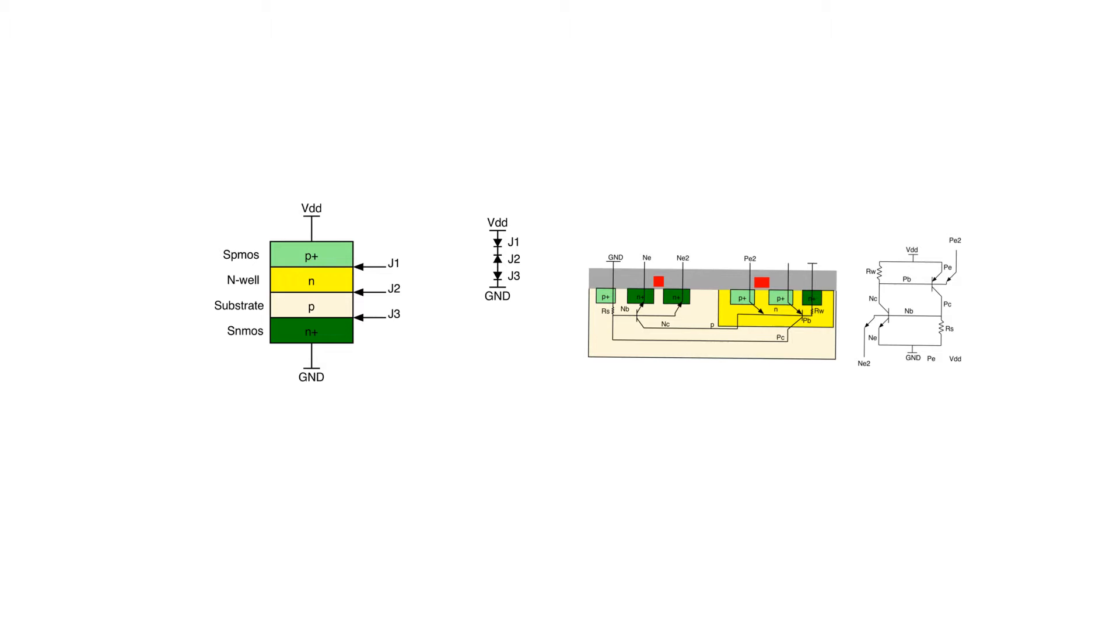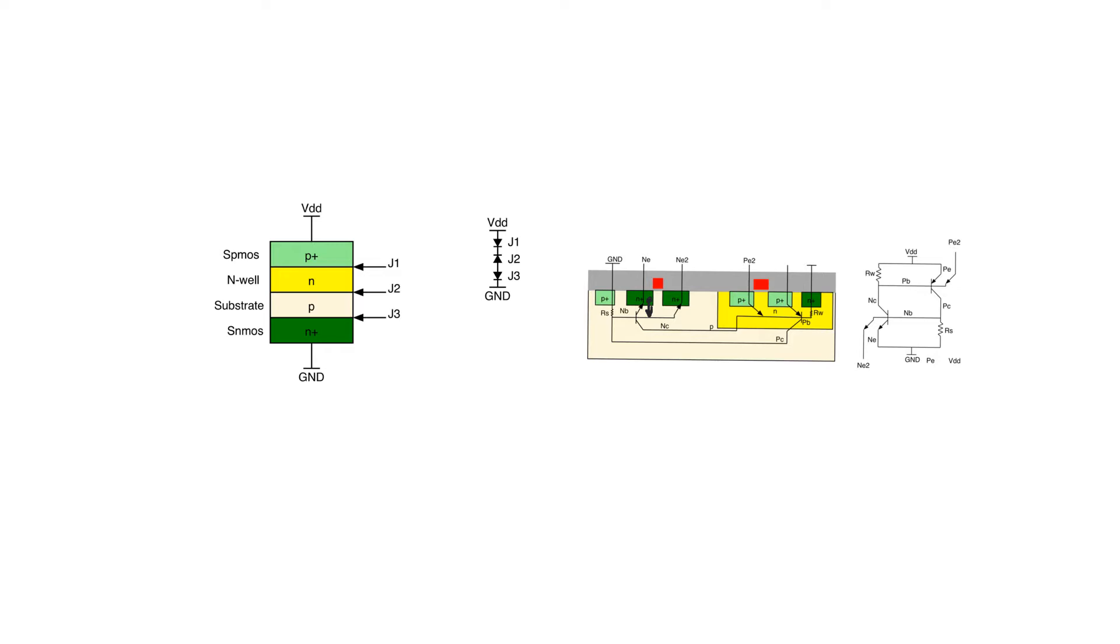So by the end of the last video, we discovered that we have three PN junctions. One PN junction is formed between the P plus of the source and the N type of the substrate. Another PN junction is formed between the substrate and the well. A third PN junction is formed between the well and the source. And therefore, when we look at these PN junctions, the connection between ground and supply includes three PN junctions connected in such a manner.